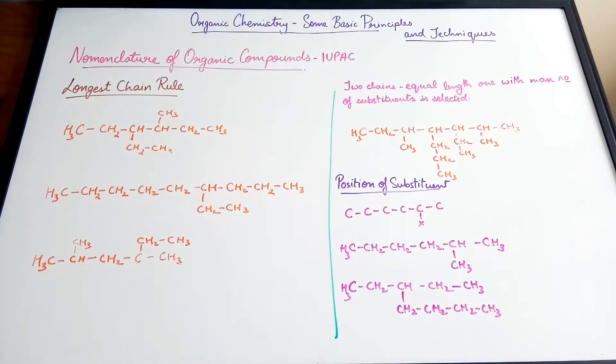In the previous video, we had discussed about the IUPAC nomenclature. The three things that are required for IUPAC nomenclature are the word root, the prefix, and the suffix.